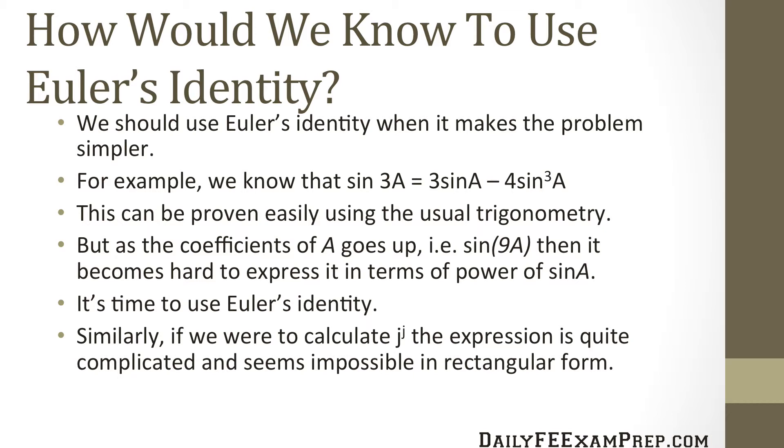Similarly, if we were to calculate j raised to the j, the expression is quite complicated and seems impossible in rectangular form. So this is another example where we can use Euler's identity to simplify that expression.